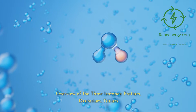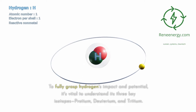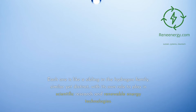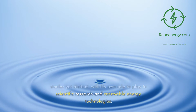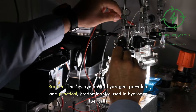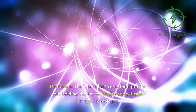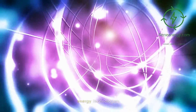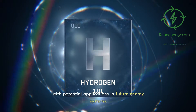Overview of the three isotopes: protium, deuterium, and tritium. To fully grasp hydrogen's impact and potential, it's vital to understand its three key isotopes. Each one is like a sibling in the hydrogen family — similar yet distinct, with its own role to play in scientific research and renewable energy technologies. Protium: the everyman of hydrogen, prevalent and practical, predominantly used in hydrogen fuel cells. Deuterium: the specialist, rarer than protium but holding the key to revolutionary fusion energy technologies. Tritium: the wild card, rare and radioactive, but with potential applications in future energy systems.